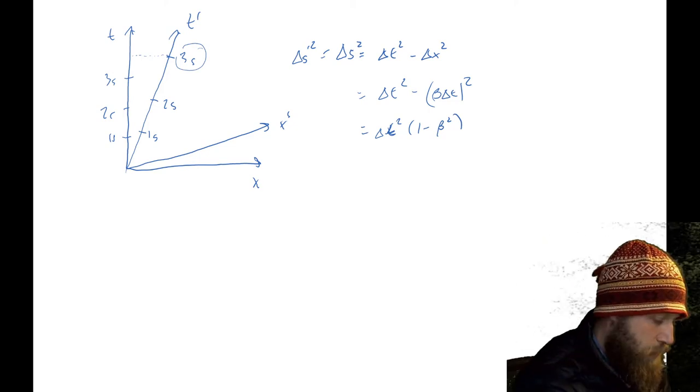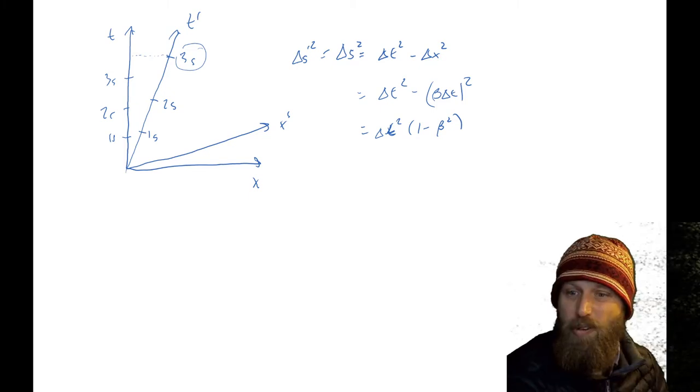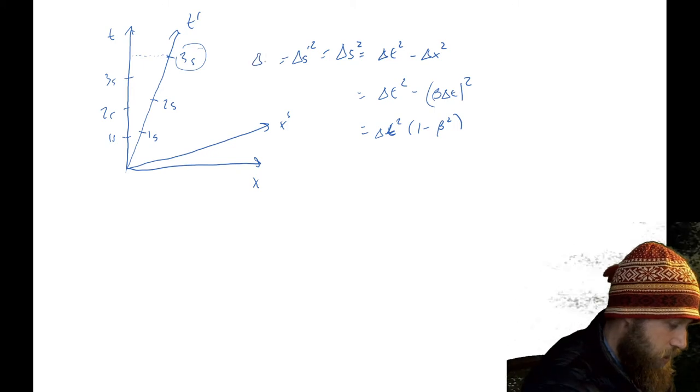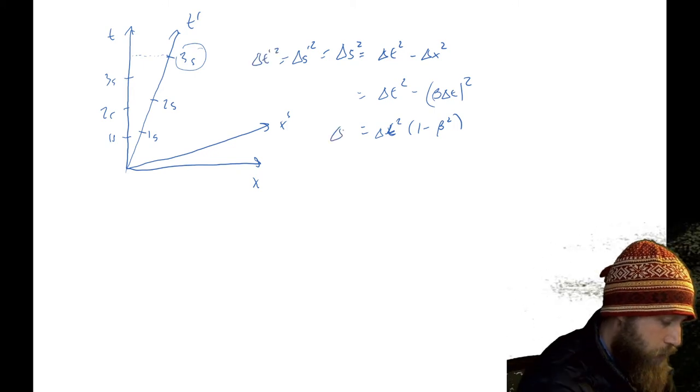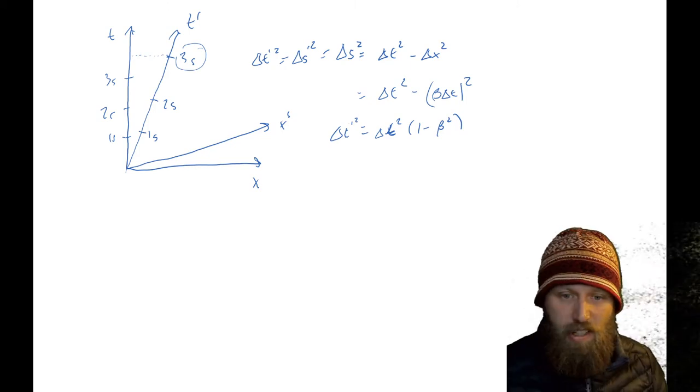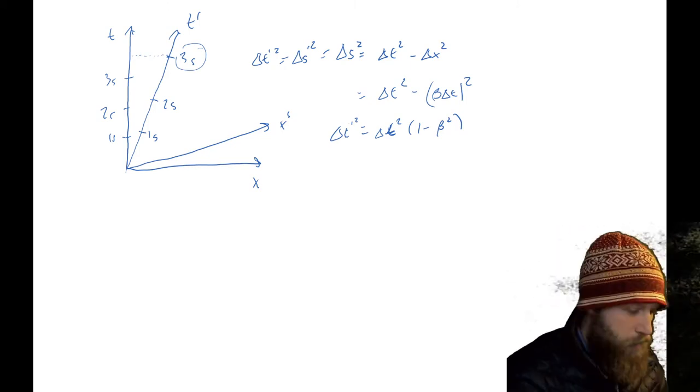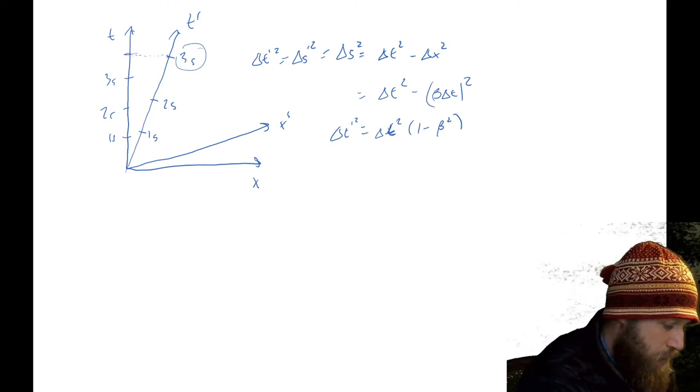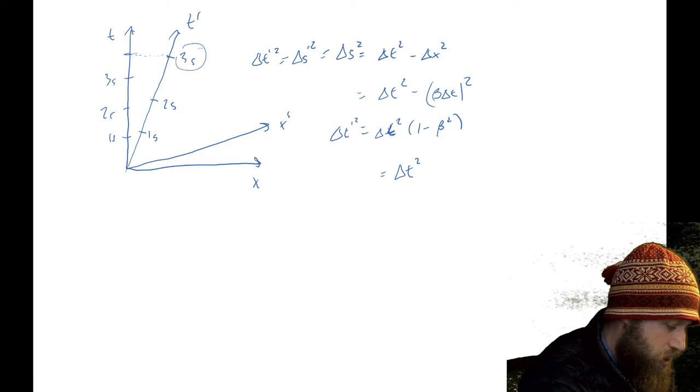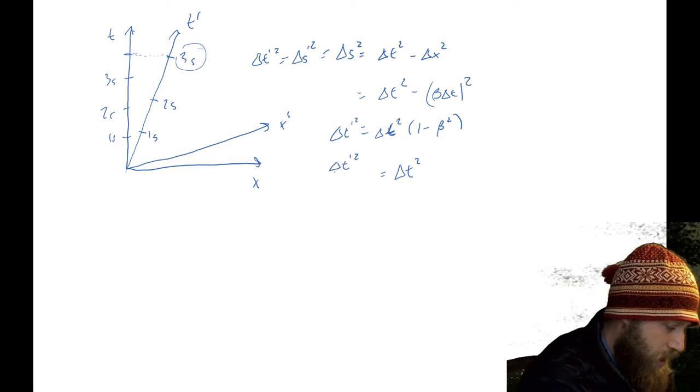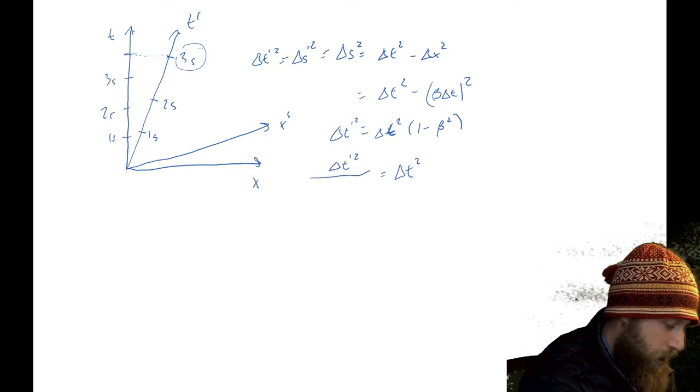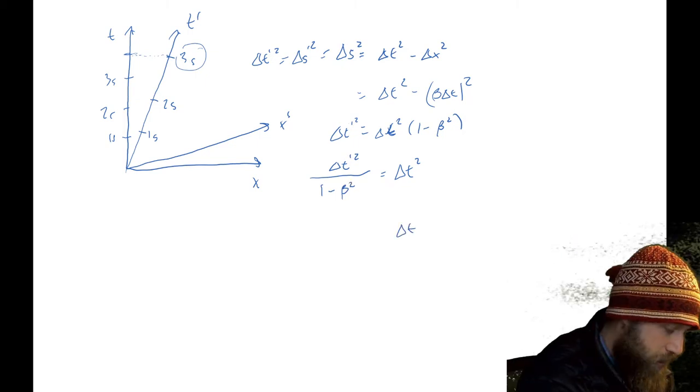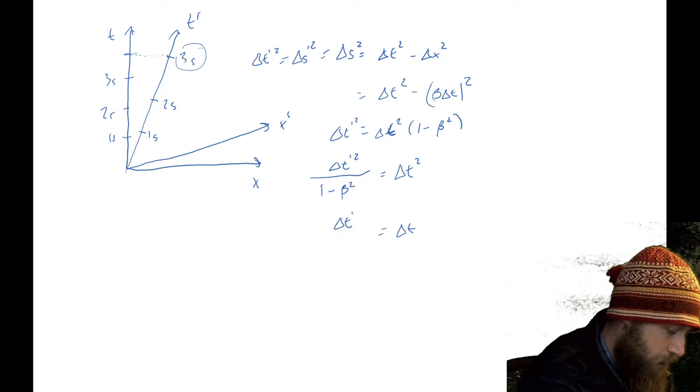And then we basically found, and again remember that this delta s prime squared is also delta t prime because it's actually on that same axis. So this is also equal to delta t prime squared. And so we basically could get what that value is in delta t prime squared, we could write it in terms of t and in terms of our t coordinates, our actual coordinates over here. And we found that delta t squared was just equal to that delta t prime squared, divided by one minus beta squared. If we take the square root of everything, we just got the delta t is equal to delta t prime, divided by the square root of one minus beta squared.